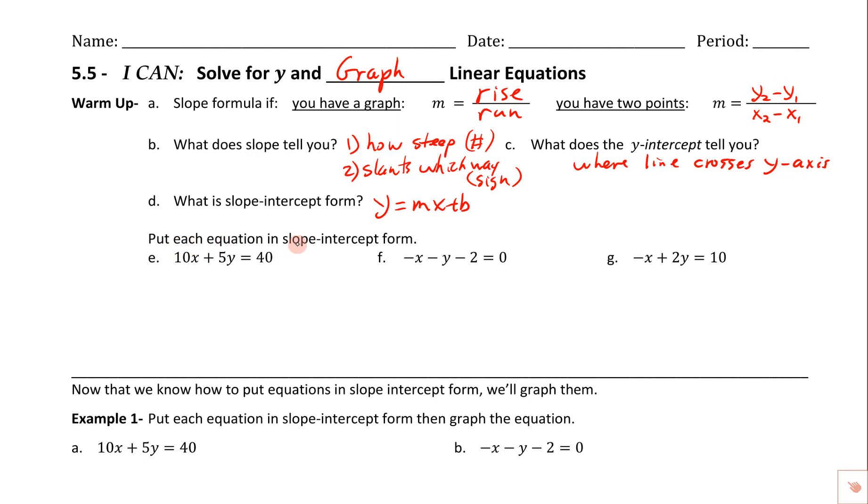It says put each equation in slope-intercept form. So this is a review of what we did yesterday in 5.4. For 10x + 5y = 40, we want to isolate the y. That means we're going to subtract 10x from both sides. We've got 5y, we want to write it with the x term first, so just kind of convention there. Then we're going to divide by 5. We end up with breaking this into two pieces: negative 2x and plus 8.